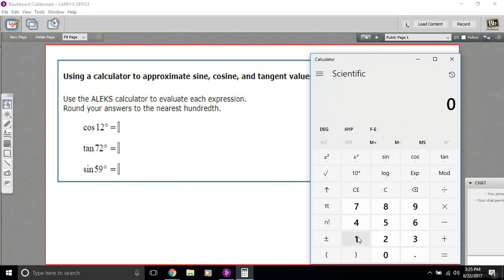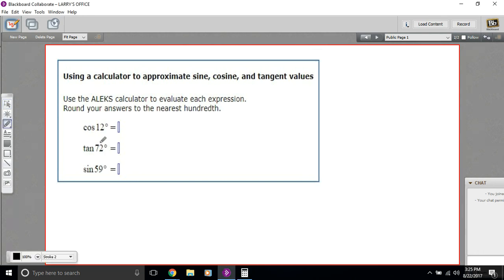And then all you really have to do is type in the number of degrees. So 12, and then hit the cosine function for the cosine. So the cosine of 12 degrees is 0.98 if we're rounding to the nearest hundredth. So 0.98.